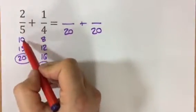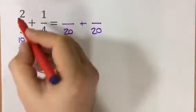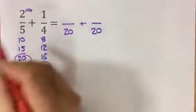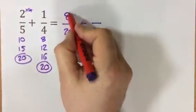Now 20 is the 1, 2, 3, 4th multiple of 5, so we need to multiply the top of this fraction by 4. 2 times 4 is 8.